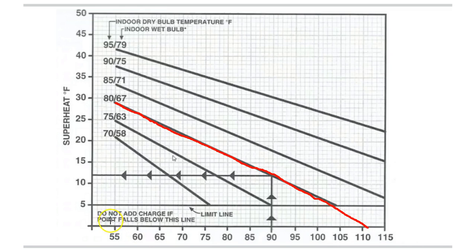If you notice, there's a point right here in this chart that says 'do not add charge if the point falls below this limit line.' So let's say that in this instance it's 90 degrees at 10 o'clock in the morning and we have 12 degrees of superheat. The indoor temperature doesn't change and the temperature rises outside to 105 degrees Fahrenheit.